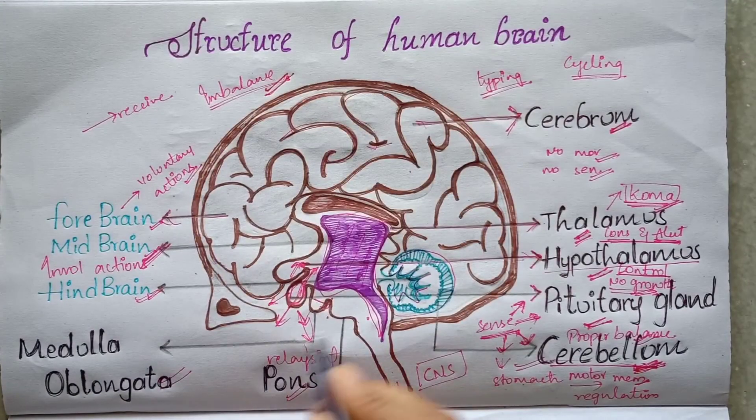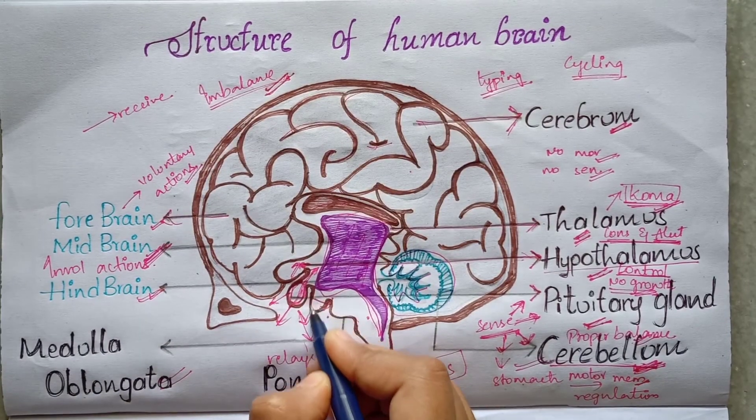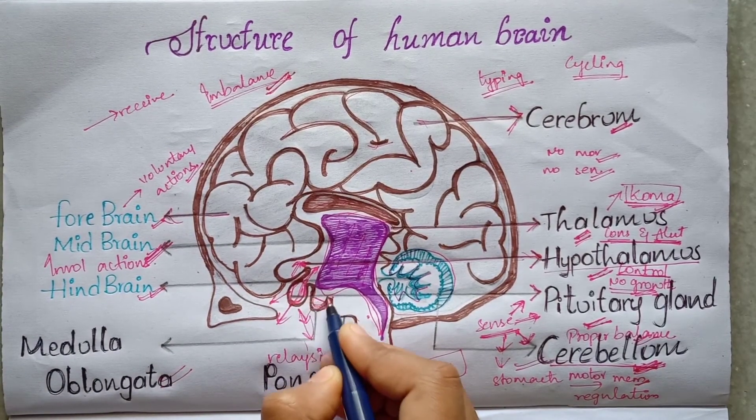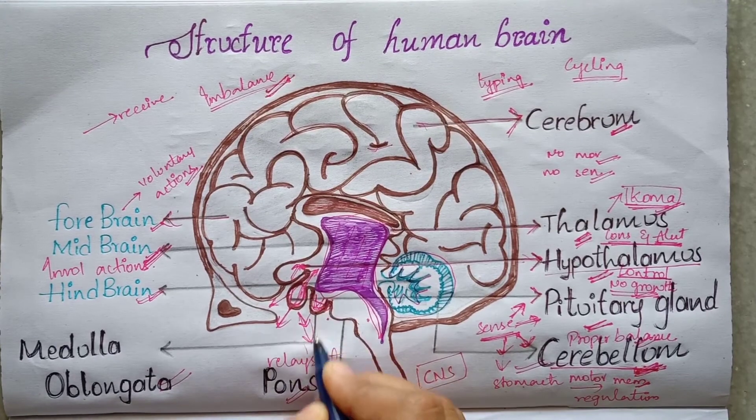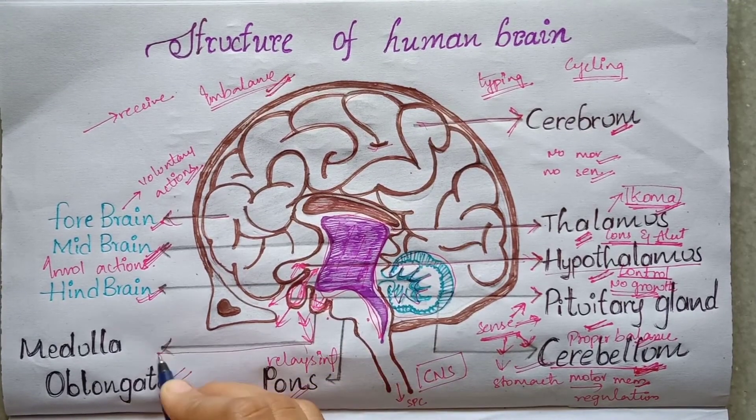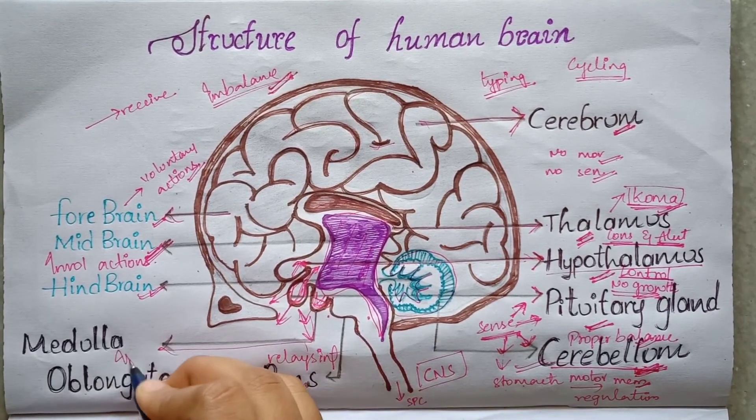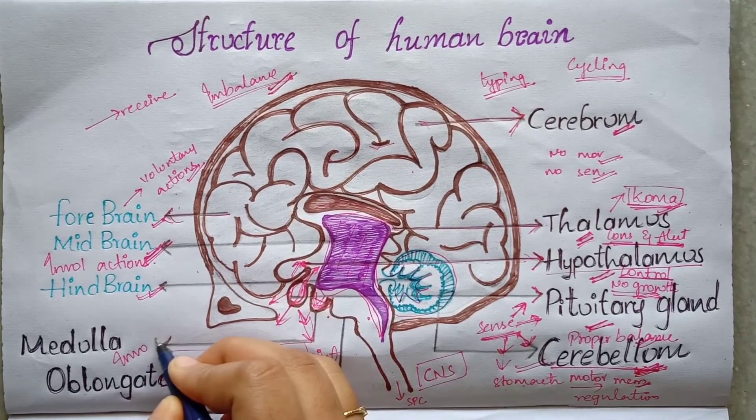The medulla oblongata's main function is to carry out involuntary actions and reflexes, such as sneezing and coughing actions.